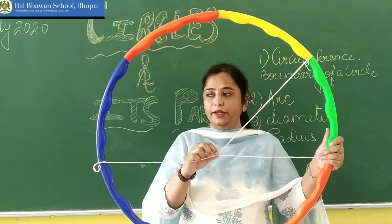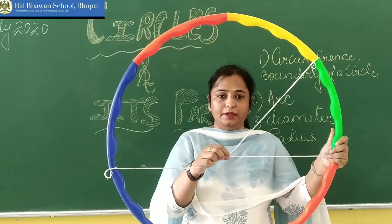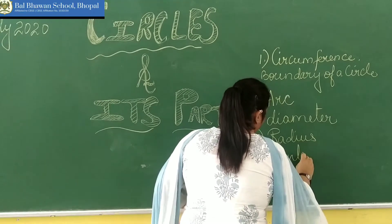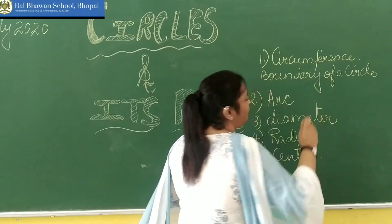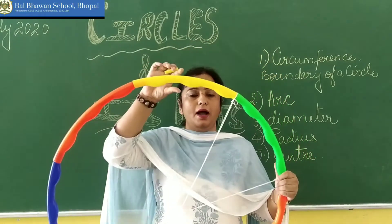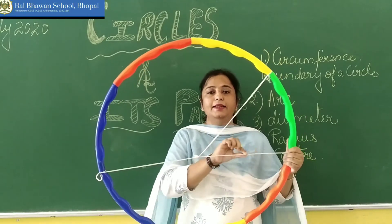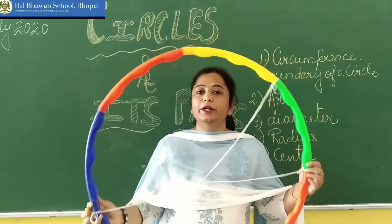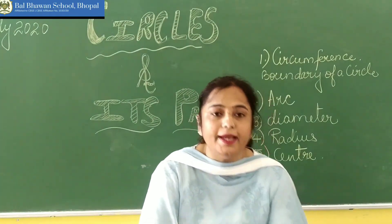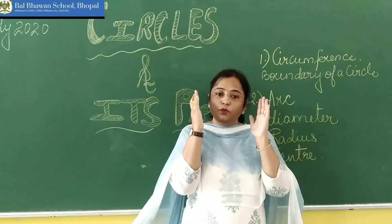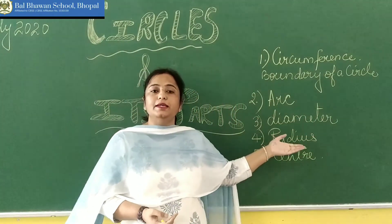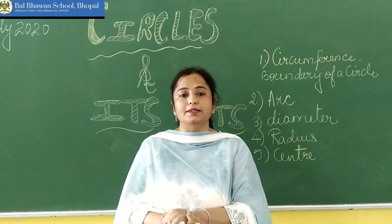Now children, where we have joined this radius and this diameter, that point is known as the centre. So I hope children that you have understood the arc, the circumference, the radius, and the diameter of a circle. Now to help you remember the big word circumference, I will give you a small thread — you will always remember the circumference with this thread. Now please draw this circle in your copy and name all the parts. Thank you.